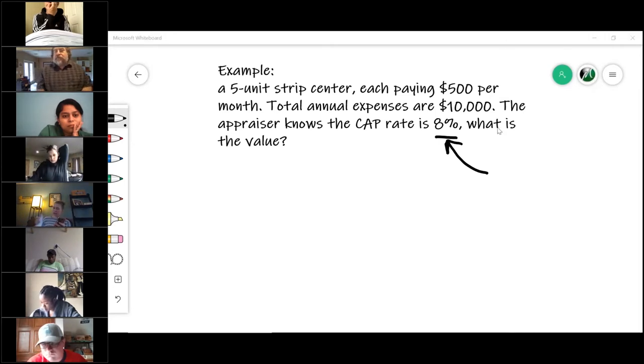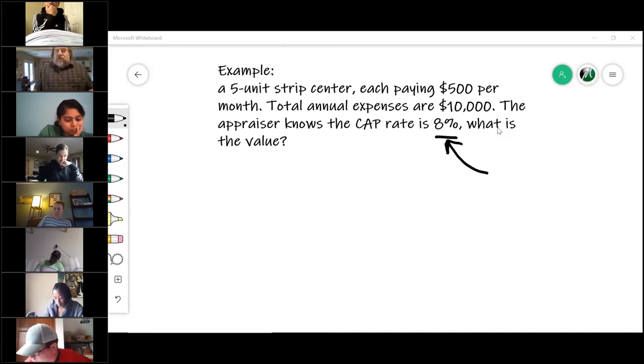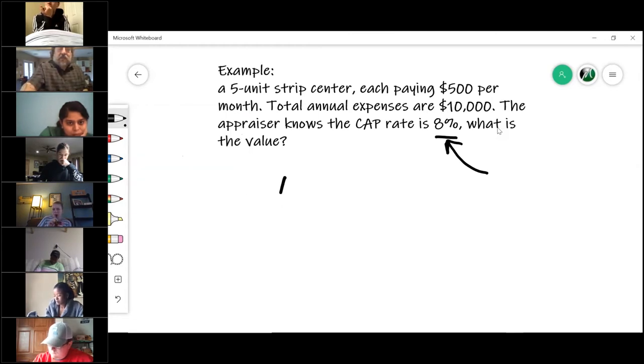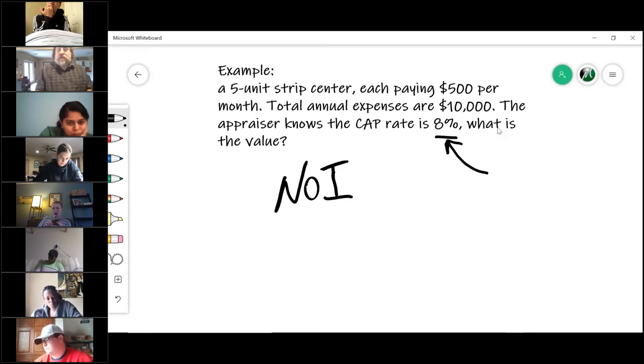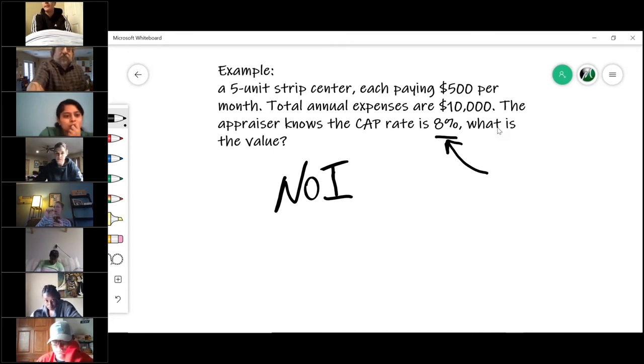So go. What is the value of this property? The first thing you would need to understand is with cap rates, I have to use the NOI. So how do I get to the net operating income?